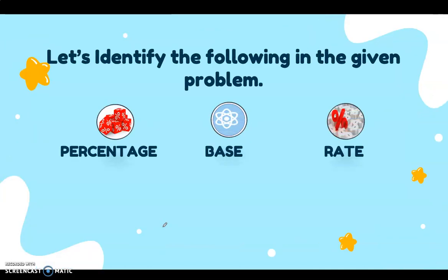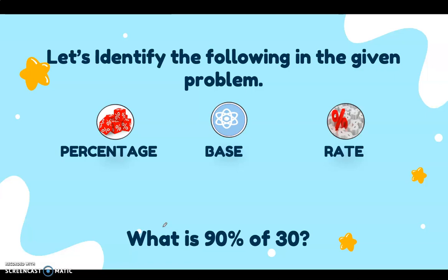Let's identify the percentage, the base, and the rate. If you're going to set up this problem, you can write it as: what is 90% of 30? That 30 is the total number of items on Lynn's math exam, and 90% is what she got correctly. So, the base is 30 — that's the total items. The rate is the one with the percent symbol, which is 90%, and the missing value is the percentage.